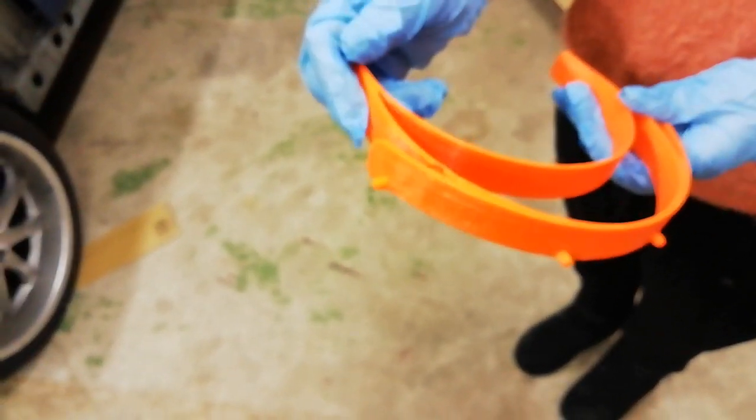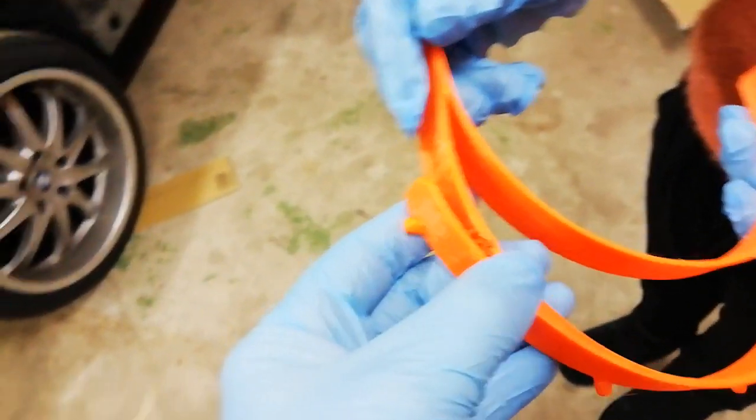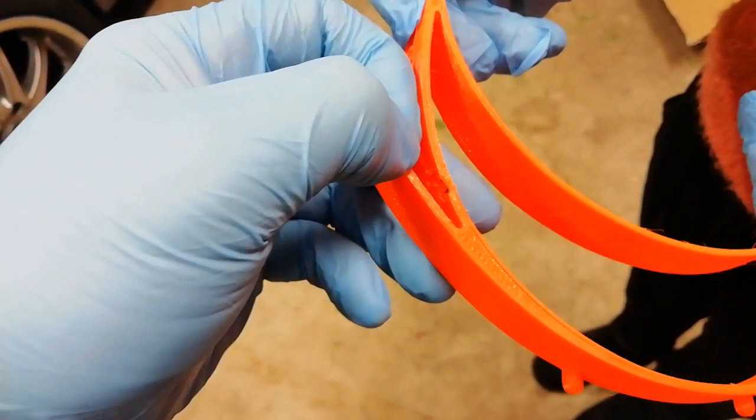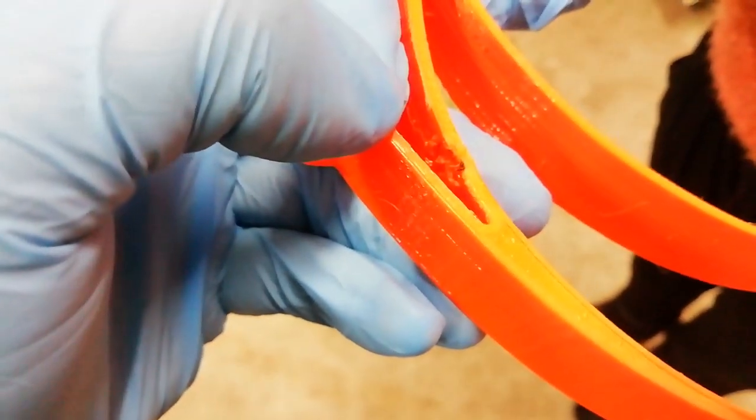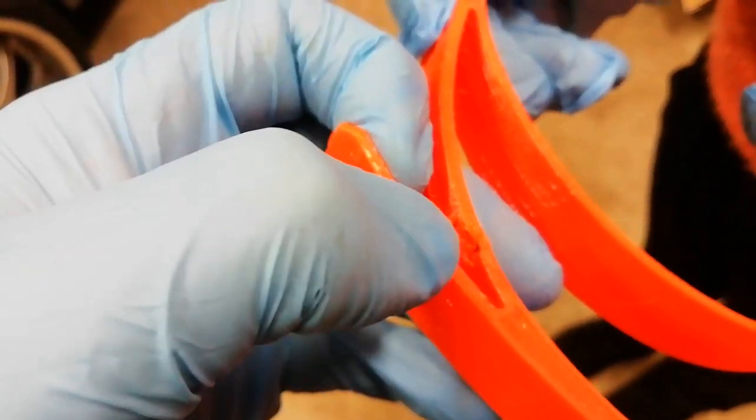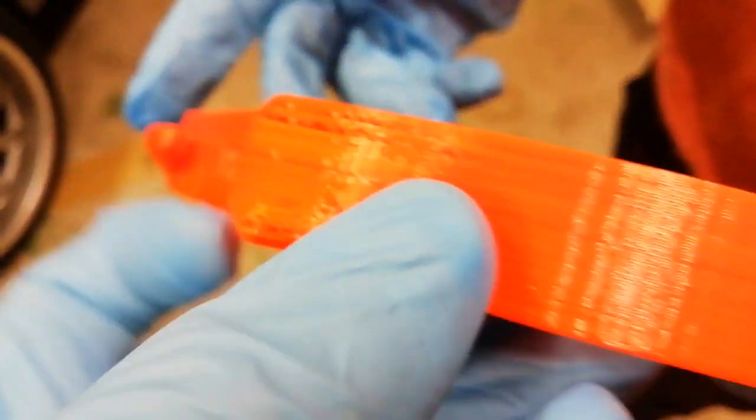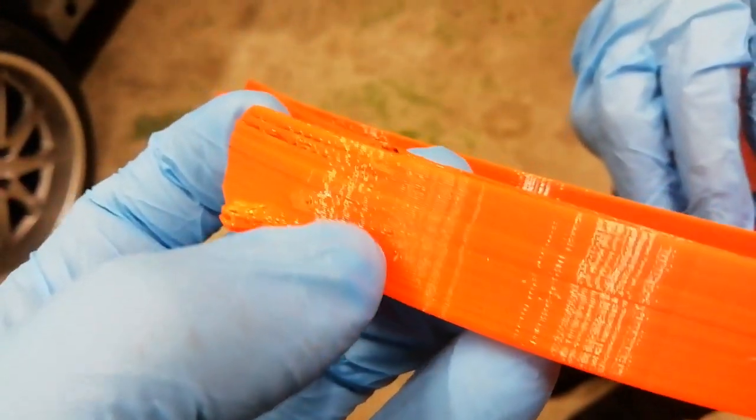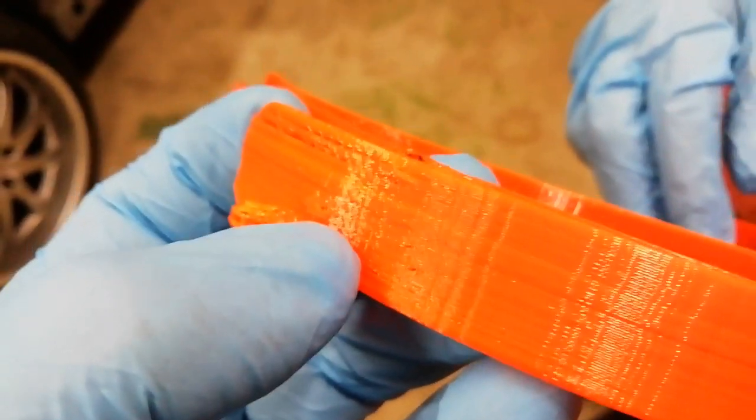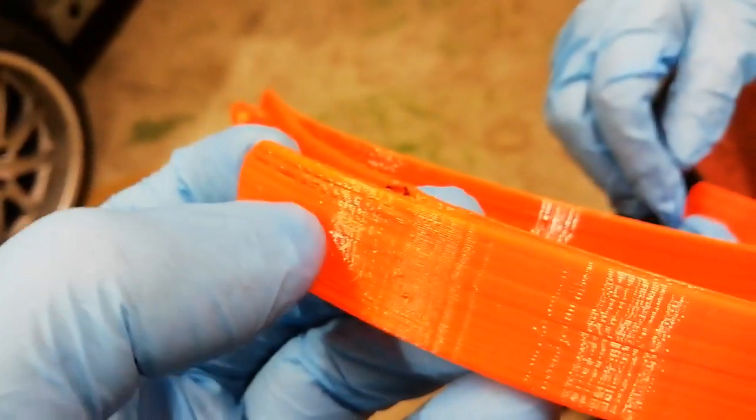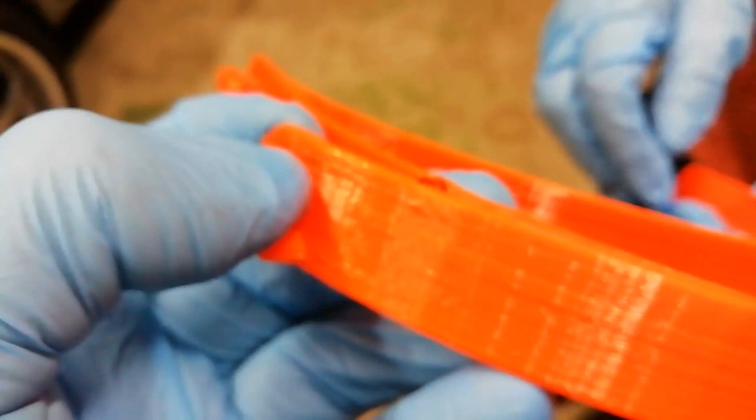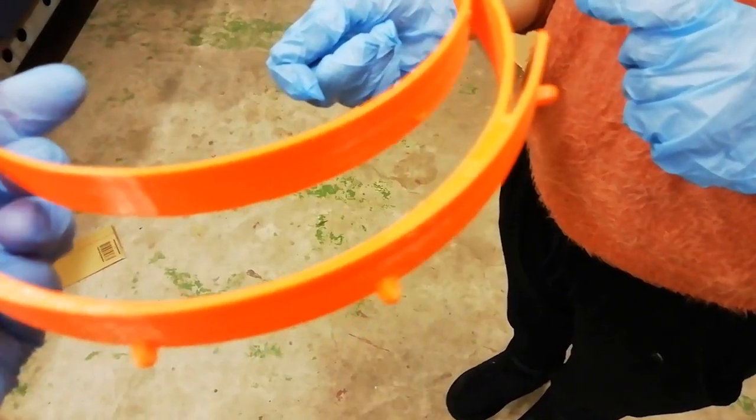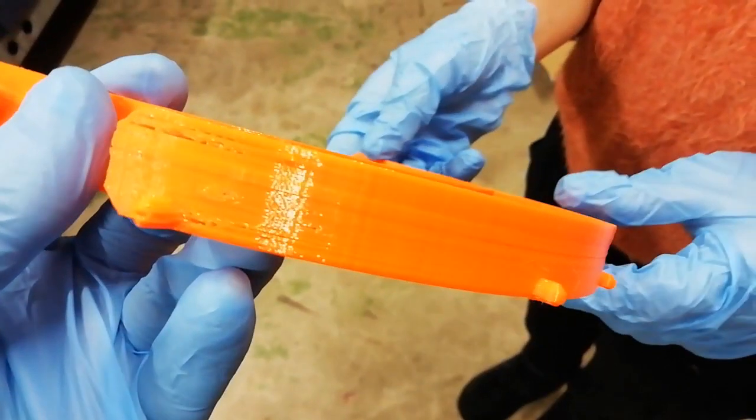This is an example of one that's not quite so good. You notice in here we've got voids. There's voids in here as well. Anything that breaks the surface is a failure because when they get washed the fluid can get inside and can't get out. Its only failure is the void.